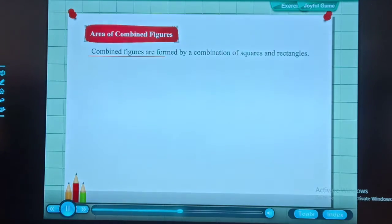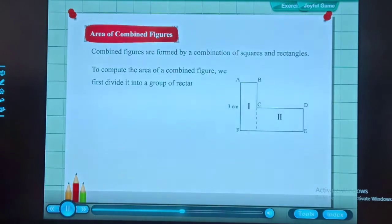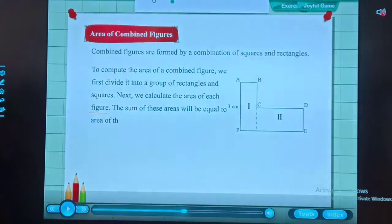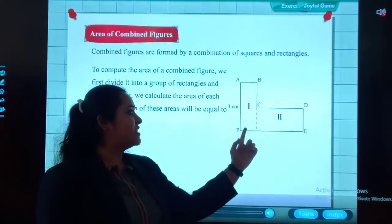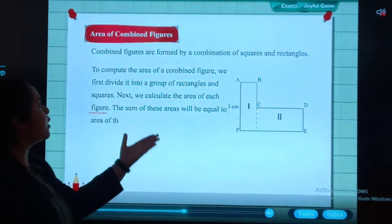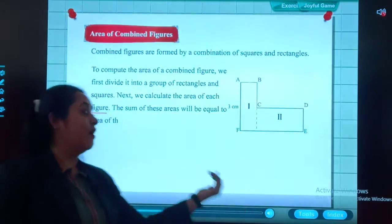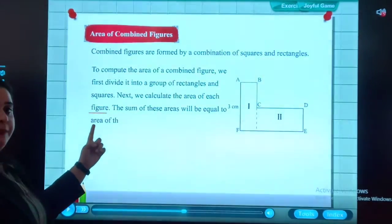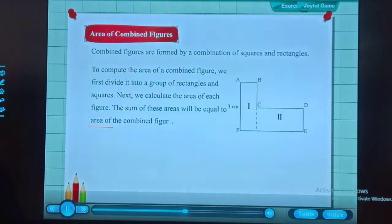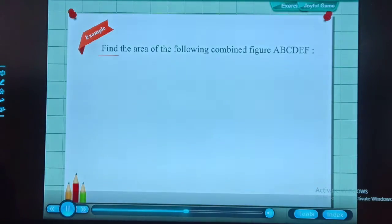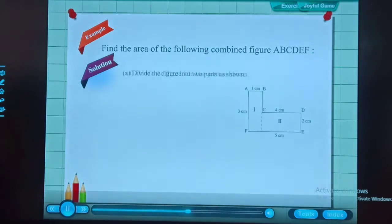We will find the area of square and rectangle separately, and then we will be adding both the areas. A combined figure is formed by a combination of squares and rectangles. So first of all we will divide this figure into square and rectangle, then we will calculate the area of each figure. The sum of these areas will be equal to the area of the combined figure.